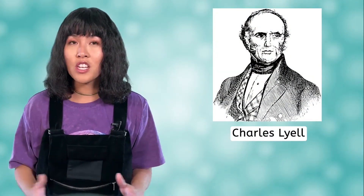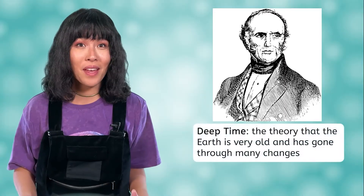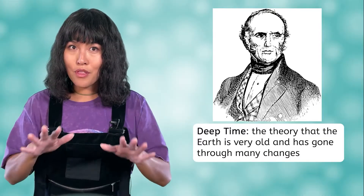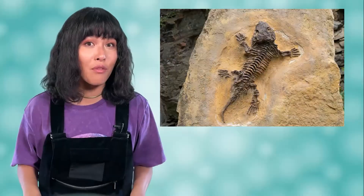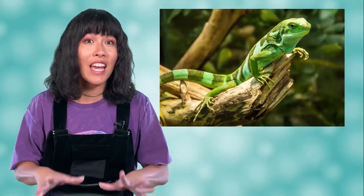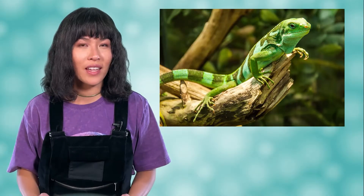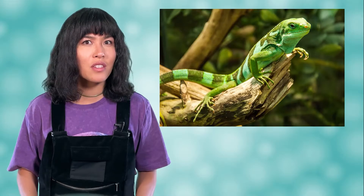How could the remains of fish and sea creatures end up on top of a mountain? He began to suspect that the geologist Charles Lyell was right about his theory that the Earth was very old — known as Deep Time — and had gone through many changes. Ground that once made up the bottom of the ocean now sat high above the land after being raised by geologic forces. He also found that many fossils resembled creatures living in the area now, but with obvious differences — a recurring theme that gave him much to think about.